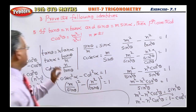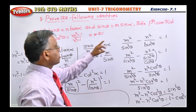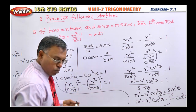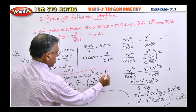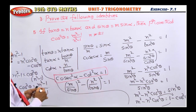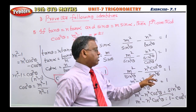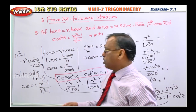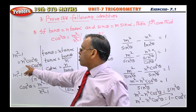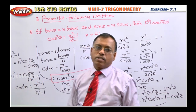Students, the key steps are: from the first equation extract cot α, and from the second equation extract cosecant α. Then use the trigonometric identity cosecant²α minus cot²α equals 1 and substitute. Convert everything into sine and cos, take the LCM, cross multiply, convert sin²θ as 1 minus cos²θ, then take cos²θ as common — and you will automatically get the answer.